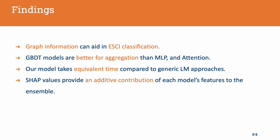Overall, our findings show us that graph information can aid in ESCI classification. The GBDT models provide the best means of feature aggregation, even better than MLP or attention. Our model's time complexity is comparable to language model approaches since the additional GNNs are computationally inexpensive to train. SHAP values enable us to convert these ensembles into a plug and play architecture for production.